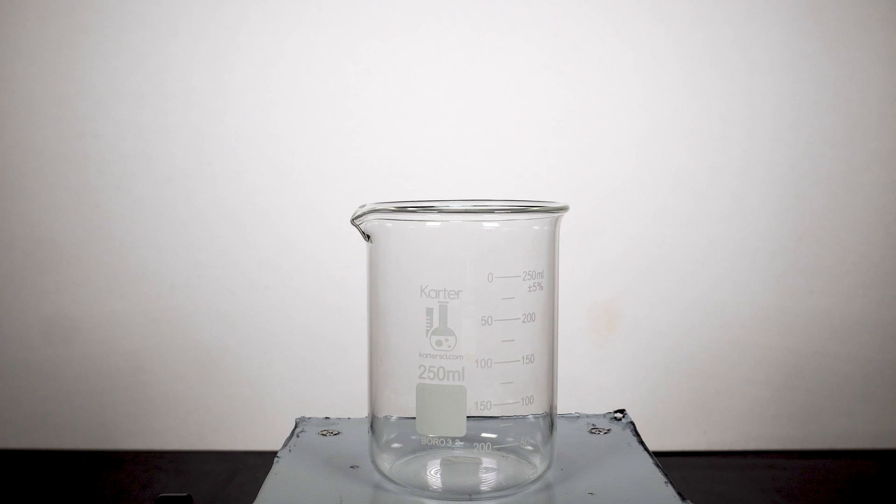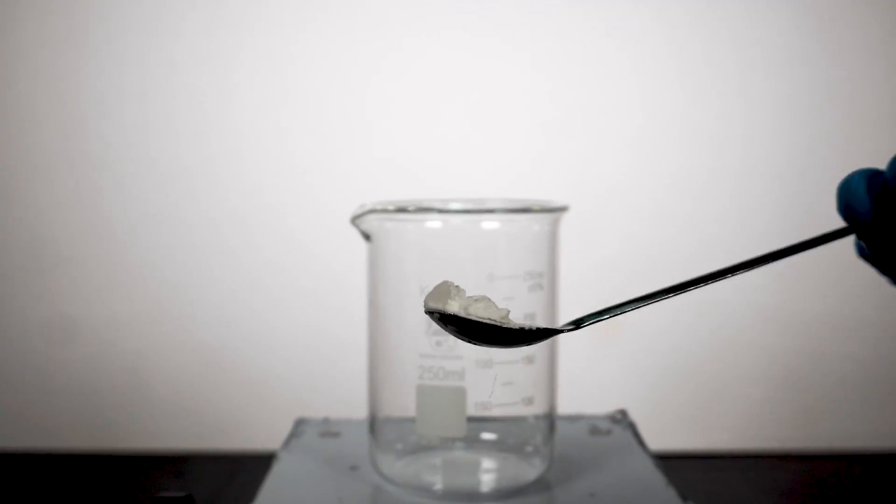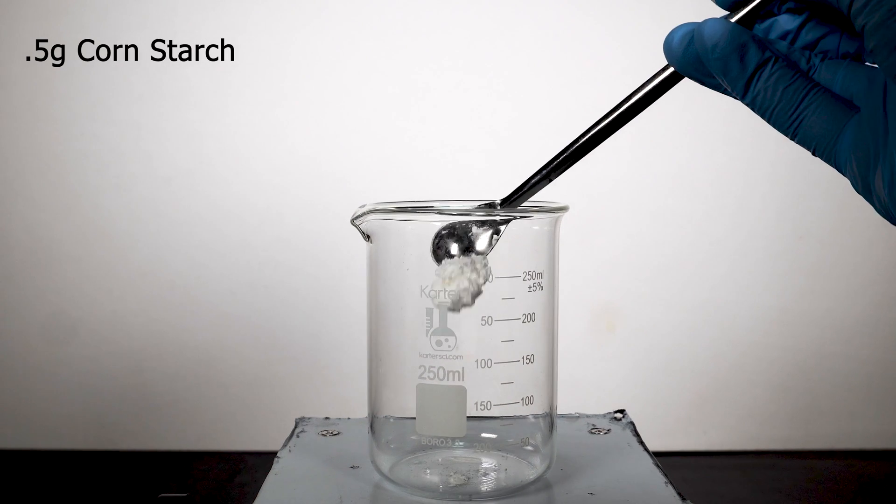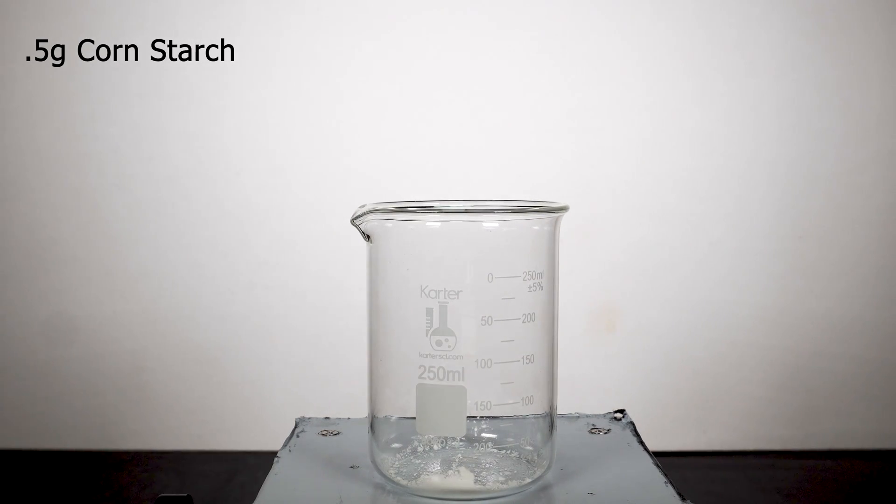The next solution consists of water, cornstarch, and hydrogen peroxide. The first thing we'll need to do is add about 0.5g of cornstarch to a beaker. Too much cornstarch, and your clock reaction will take a little bit longer to make its final complex, but this isn't always a bad thing.